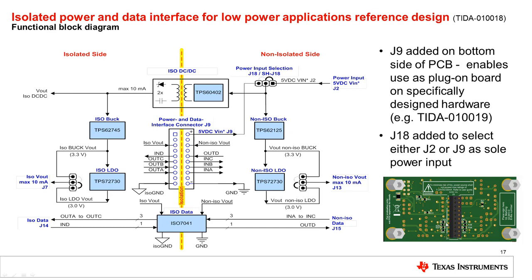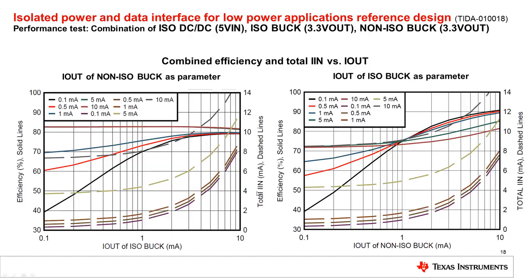This additional power and data interface connector allows the board to be used as a plug-on board on specifically designed hardware, for example on the TIDA-010019. We have also a power input selection header implemented, which allows selecting either the power input coming from the headers on the top side (J2) or from the power and data interface connector on the bottom side (J9). The performance of the reference design has been evaluated in depth, and the results are contained as performance graphs in the user guide, which can be downloaded from the web.